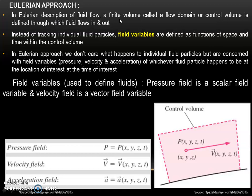In Eulerian description of fluid flow, a finite volume called flow domain or control volume is defined through which fluid will flow in and out. Instead of tracking individual fluid particles, fluid variables — which are field variables — are defined as functions of space and time within this control volume. In the Eulerian approach, we do not care about what happens to the individual fluid particles but are concerned with field variables like pressure, velocity, acceleration, etc. of whichever fluid particles happen to be at this location at a particular instant of time.